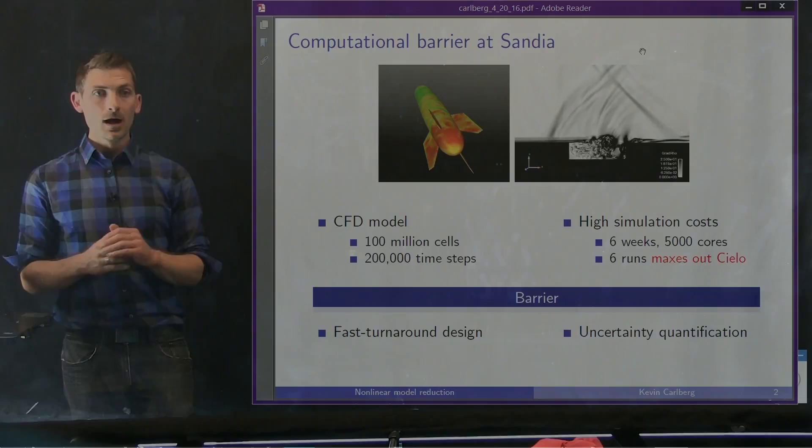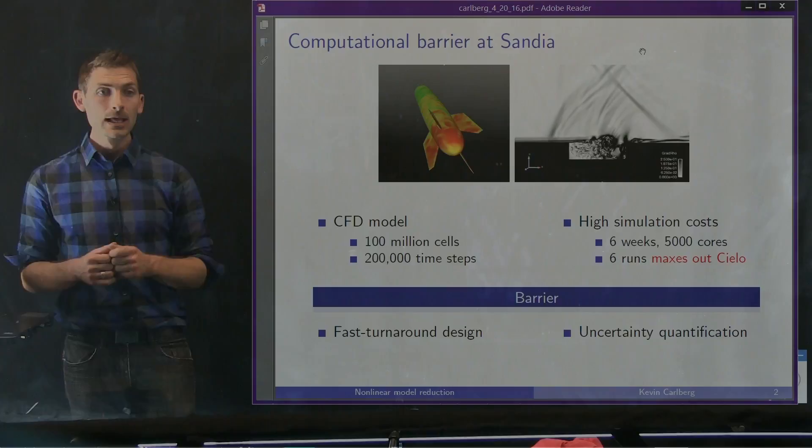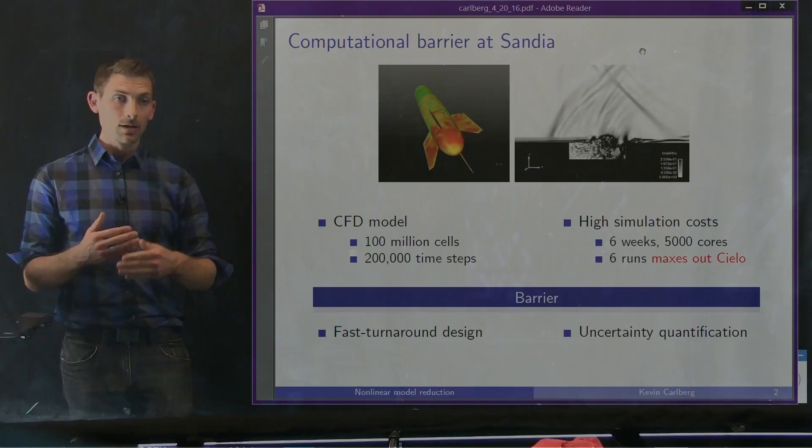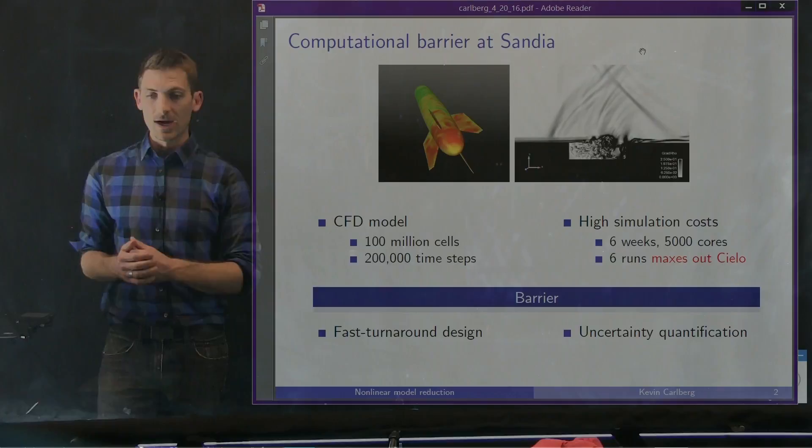In particular, for fast turnaround design, our design engineers would like the response of this system on the order of half an hour to an hour or two — they can't wait six weeks to tweak the design. We'd also like to do uncertainty quantification, characterizing the uncertainty of boundary conditions on the performance of the store, which often requires hundreds or thousands of simulations. If each simulation is this expensive, that task quickly becomes intractable.